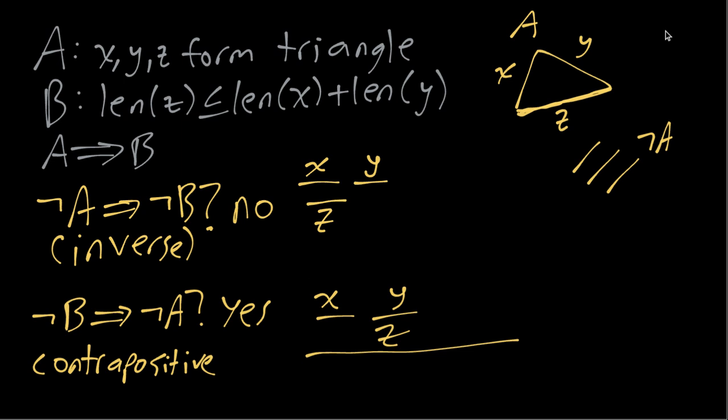And we can see clearly that is not going to be possible because Z is longer than X plus Y. So whenever we have a situation like this where B is false or in other words where the length of Z is longer than the sum of the lengths of X and Y, A will also be false. It's not possible to form a triangle.